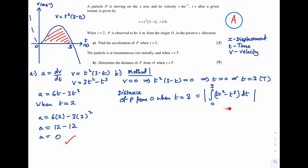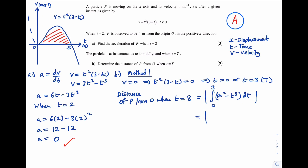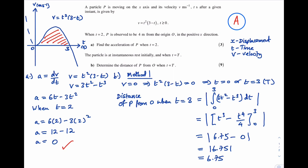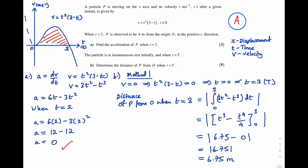Integrating term by term, the absolute value of [t³ - t⁴/4] from 0 to 3: substituting t = 3 gives 6.75, and substituting t = 0 gives 0. So we have |6.75| = 6.75 metres. Don't forget to include the unit, metres. This completes Method 1.